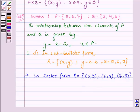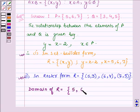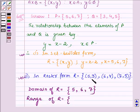So thus our answers are these two, and also we are required to find the domain and range of R. The domain of R is the set of all the first elements of these ordered pairs. So the first elements are 5, 6 and 7. And the range is the set of all the second elements of the ordered pairs, and there are 3, 4 and 5.